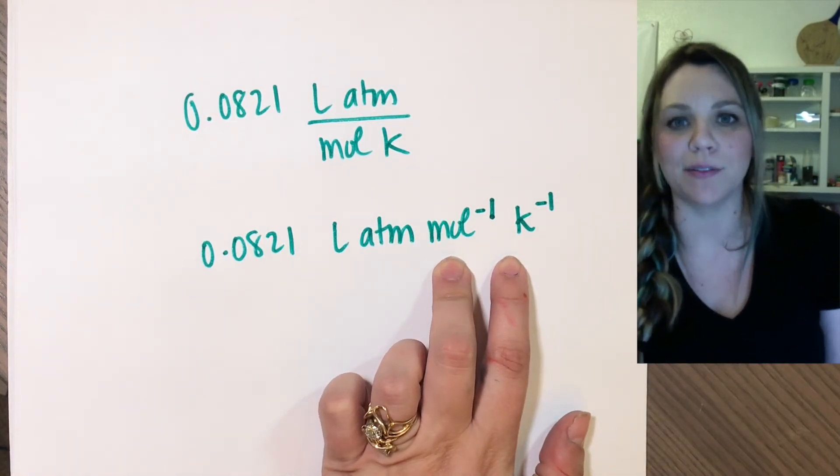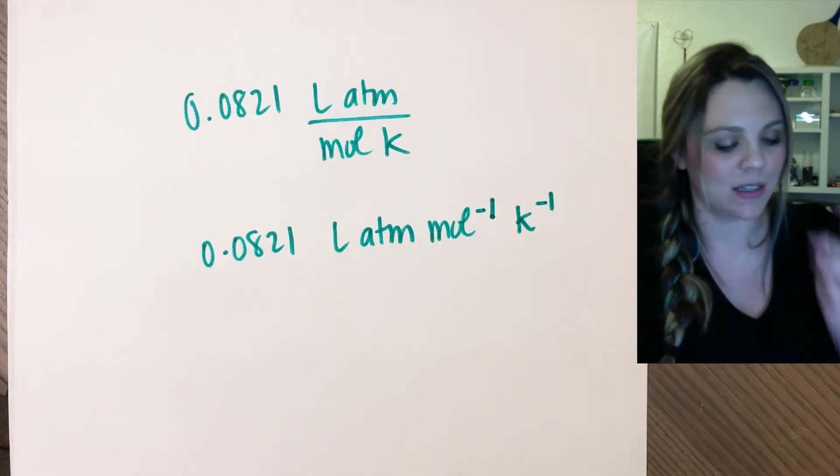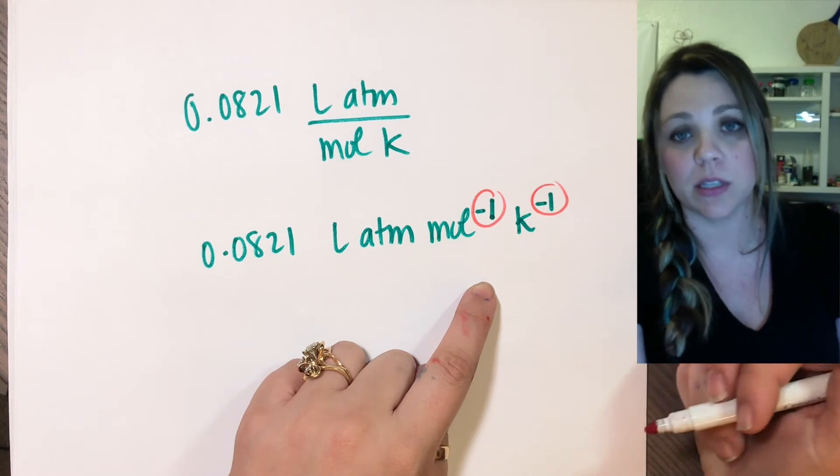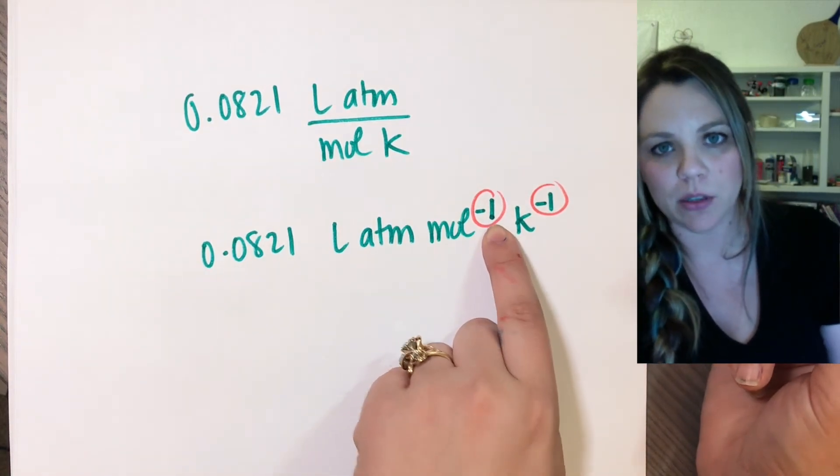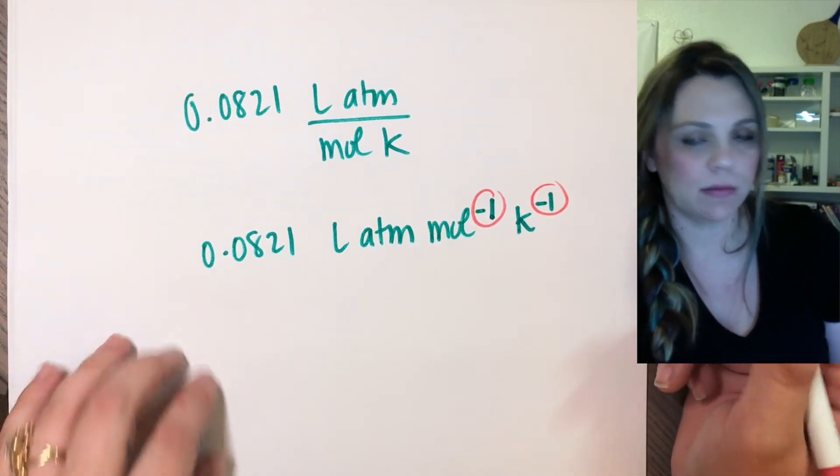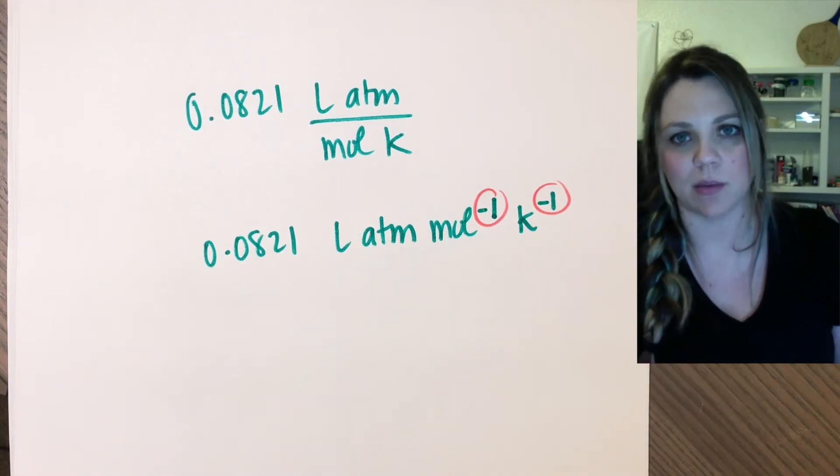So depending on your comfortability with the math and exponents, this may throw you for a loop. Please don't let it. It's not scary or anything. To the negative one power just means you're flipping it so it's on the denominator. So probably if someone was typing out a worksheet or if this is on the back of your periodic table or something,